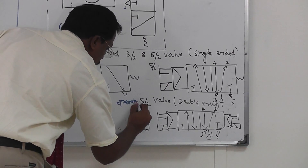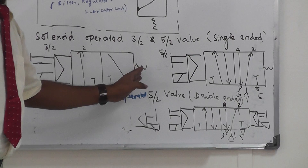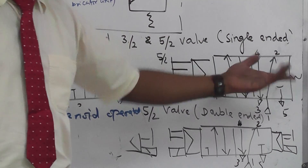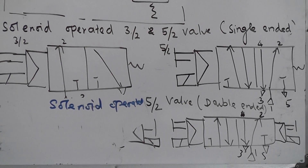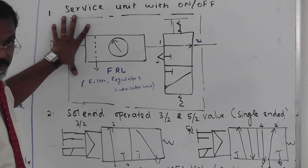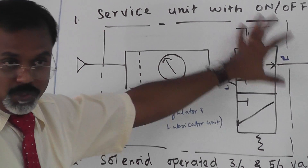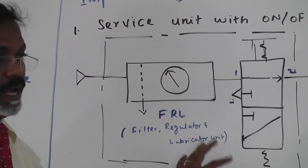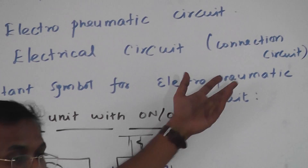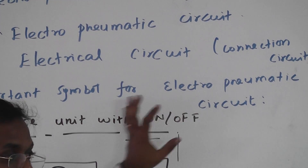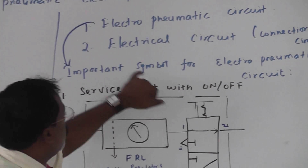The solenoid operated single-ended 3/2 and 5/2 valves are spring return — you give a signal only for the forward stroke, and the return stroke happens automatically due to the spring. These are the main valve types used in electro-pneumatic circuits. The service unit symbol contains the FRL unit and one switch — this is the common symbol used for all electro-pneumatic circuits.